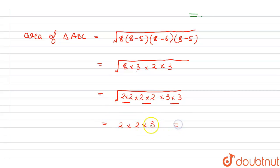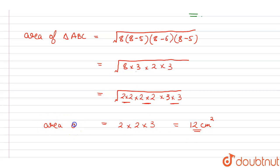So this equals 3 times 2 is 6, times 2 is 12. The area of triangle ABC — the isosceles triangle — is 12 centimeters square.